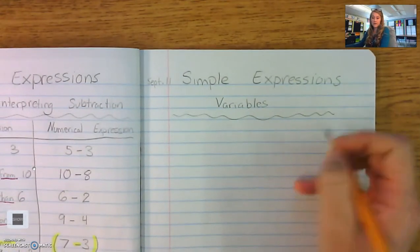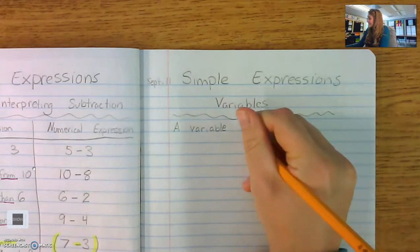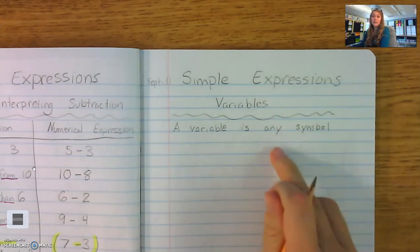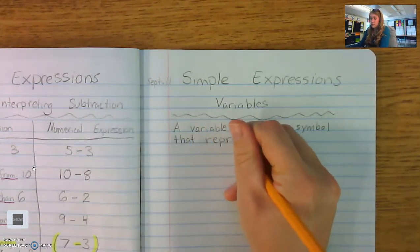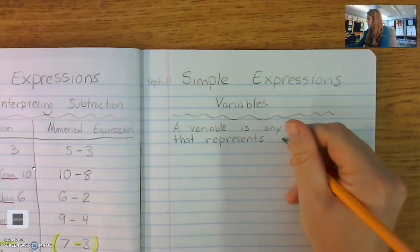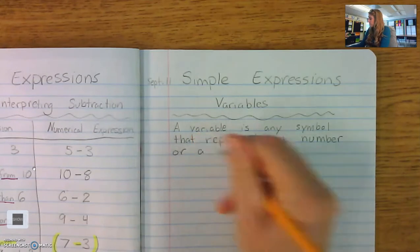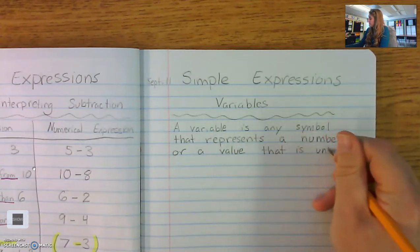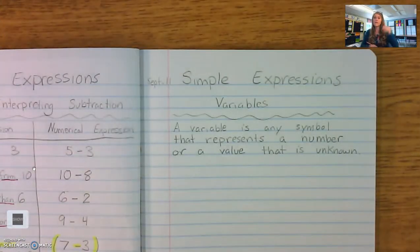So the first thing we want to do is define what a variable is. A variable is any symbol, now usually it's a letter but it can be any symbol that represents a number or value that is unknown. A variable is any symbol that represents a number or value that is unknown.